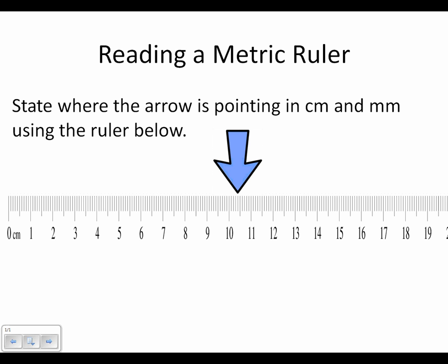Let's review reading a metric ruler. If I look at this metric ruler on the screen, I can see that the ruler is in centimeters, which is perfect. I know that each whole number represents a centimeter: two, three, four, five.